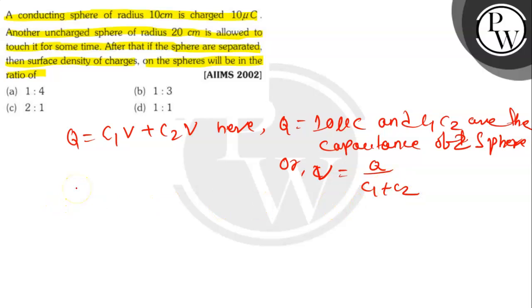After touch, the charge on the first sphere is Q1 = C1V = C1Q/(C1+C2). The charge on the second sphere is Q2 = C2V = C2Q/(C1+C2).